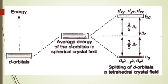A helpful tip for crystal field splitting: in the t₂g set there are three letters, so there are three orbitals — d_{xy}, d_{yz}, and d_{xz}. In the e_g set there are two letters, so there are only two orbitals — d_{x²-y²} and d_{z²}. For a tetrahedral field, t₂g should be drawn on the top and e_g at the bottom — because tetrahedral starts with 'T,' so t₂g goes on top. For an octahedral field, it is exactly the opposite.